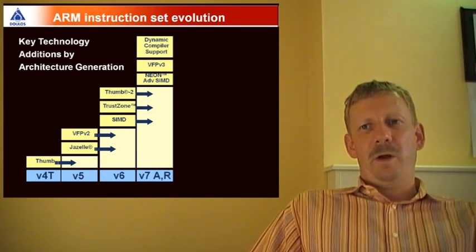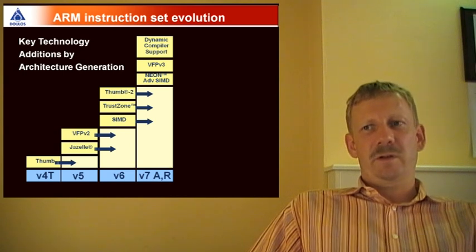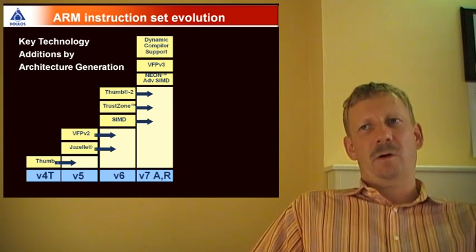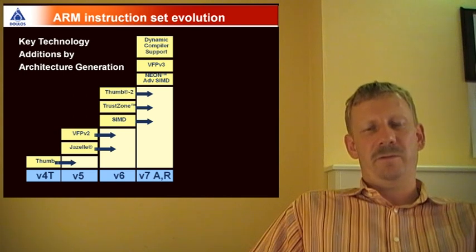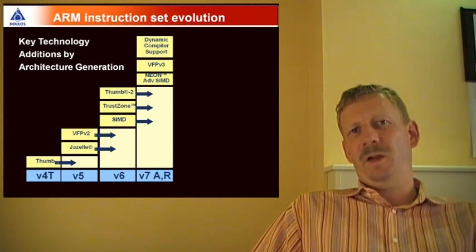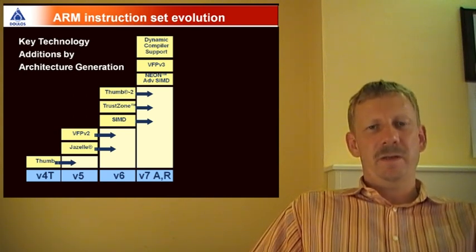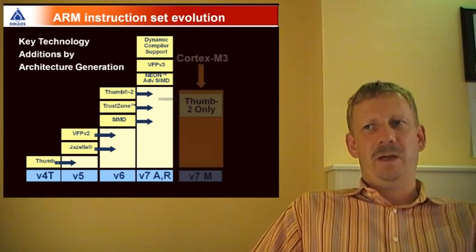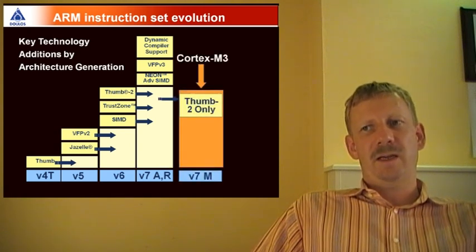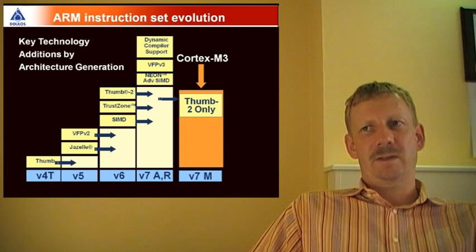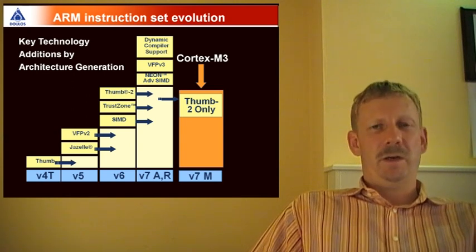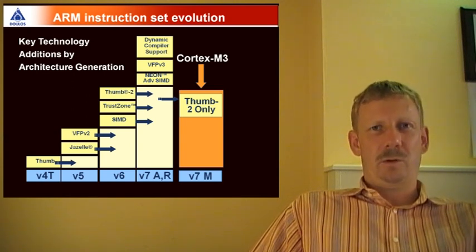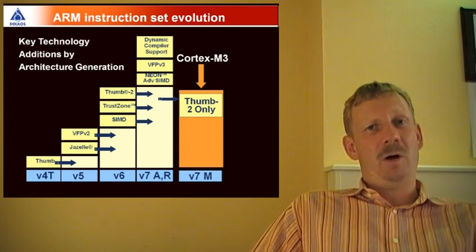We are now from V4 instruction set up to V7-R and V7-A instruction set, which includes very sophisticated instructions for multimedia design. This is clearly not for the microcontroller market. So ARM decided to have a subset of that, which is the V7-M architecture, which includes the Thumb-2 instruction set only, explicitly for the microcontroller market for the Cortex-M architecture.